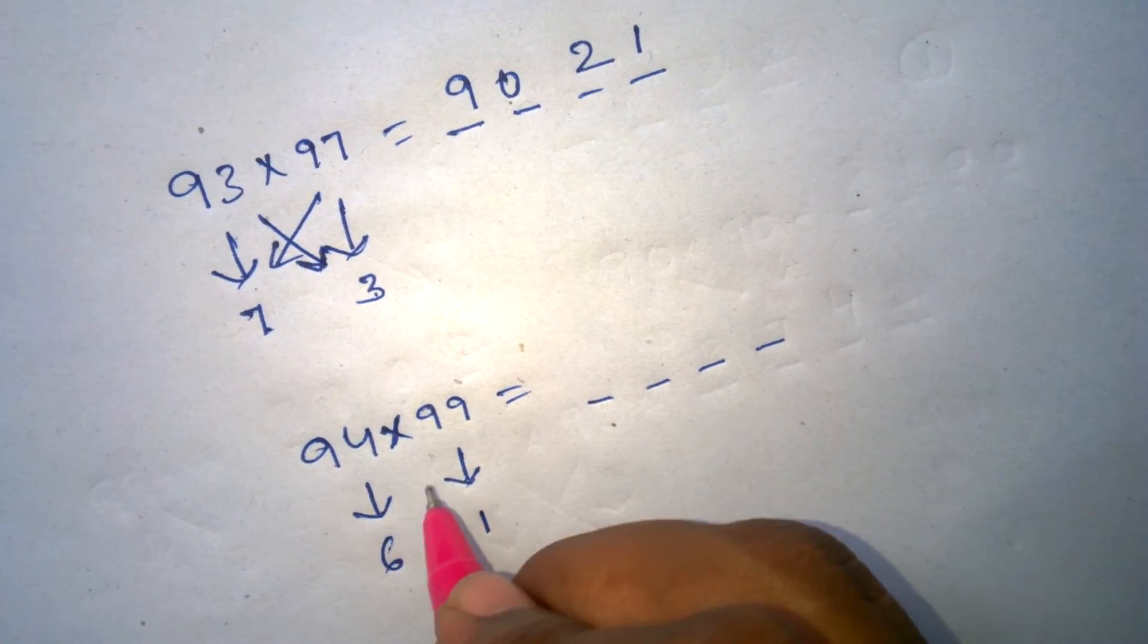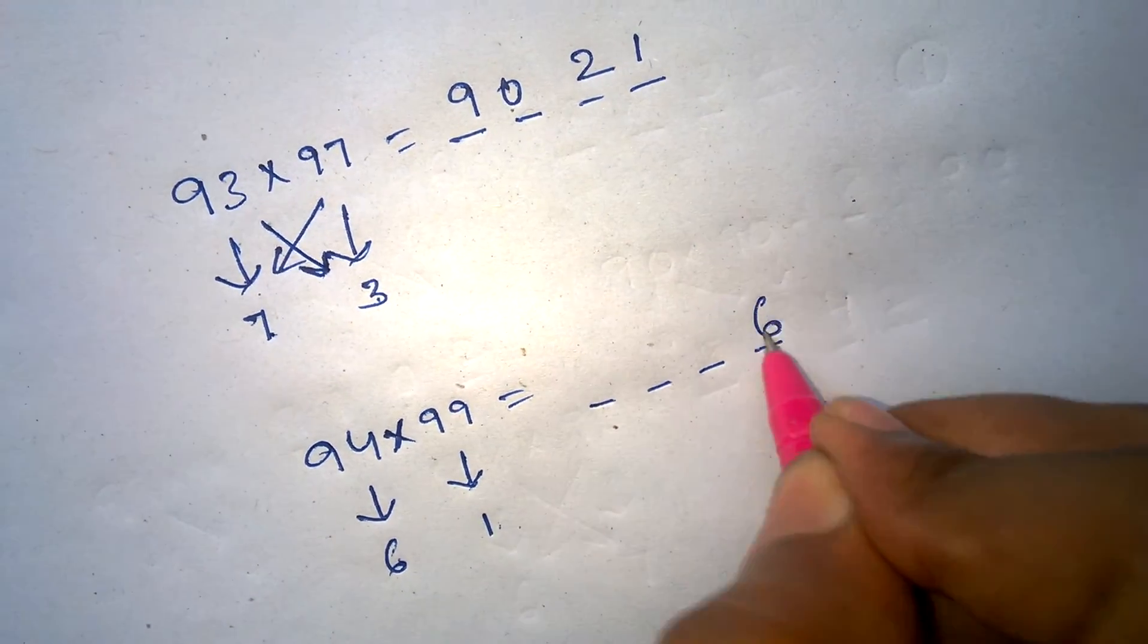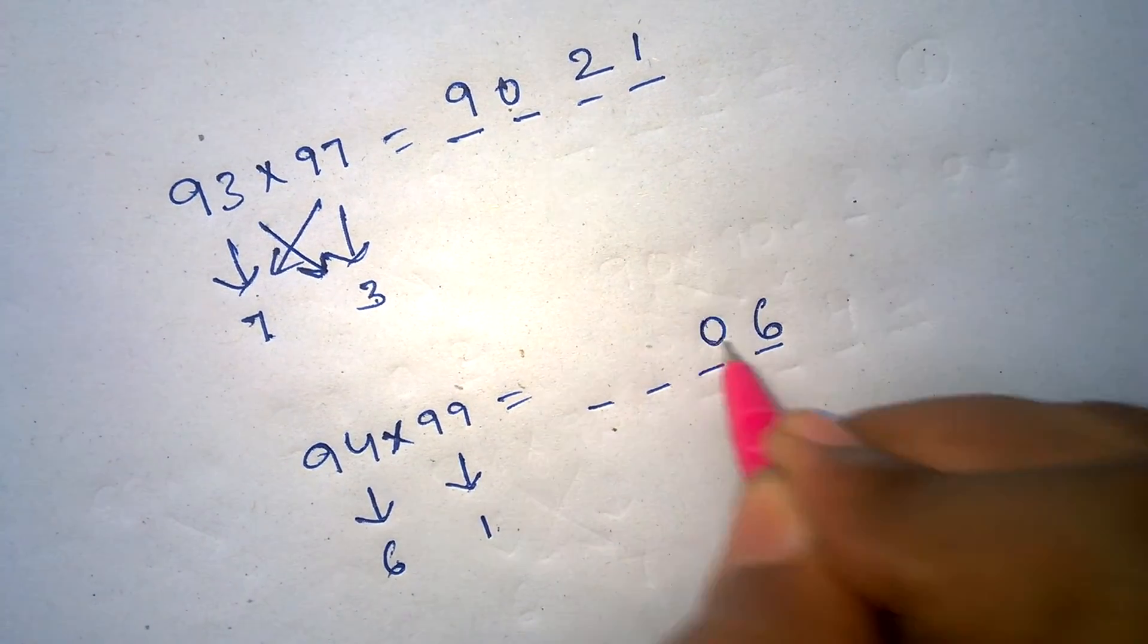The answer has 4 digits. 6 times 1 is 6. Since it's a single digit, it's 06.